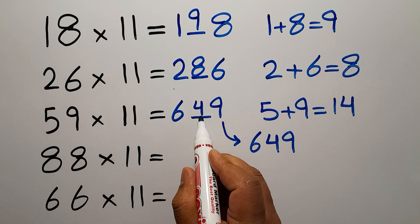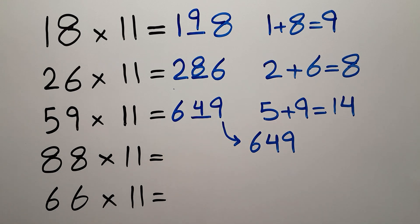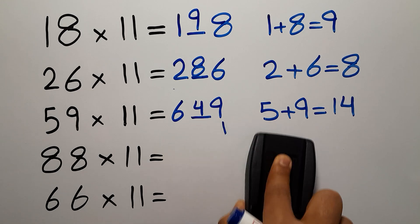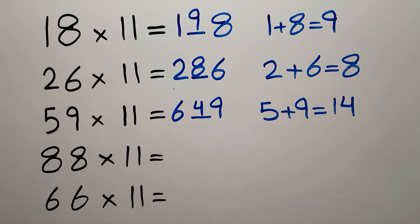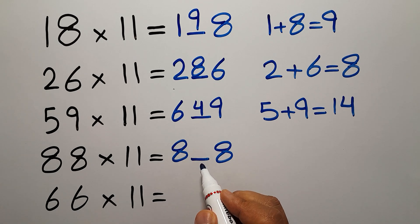Okay, so here we have 649. The answer is 649. Note this multiplication: 88 times 11. We write 8, leave a blank space, and again write 8. To fill the blank space.